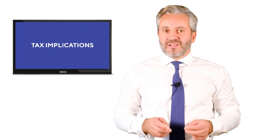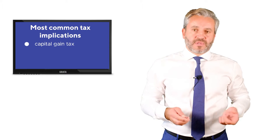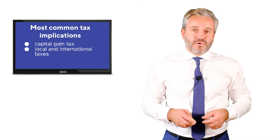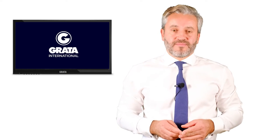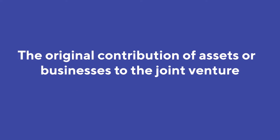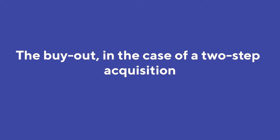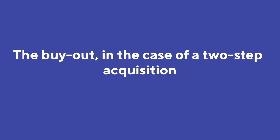Knowing the tax implications is vital to forming a successful joint venture. The most common tax implications considered are capital gains tax, local and international taxes, and minimizing recurring taxation. Capital gains tax includes transfers and similar taxes — these could arise from the original contribution of assets or businesses to the joint venture, the restructuring of those contributions, or a buyout in the case of a two-step acquisition.